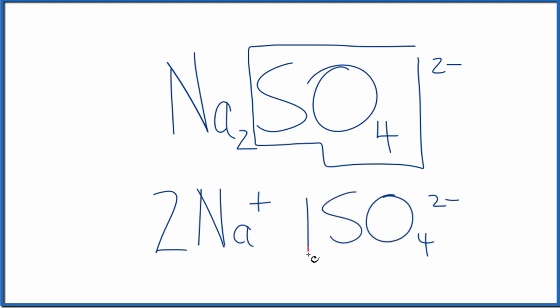And we have one of those, although we don't write the one by convention. So two sodium ions, Na+, sodium's in group one on the periodic table, they have a one plus ionic charge. And then just one sulfate ion, SO4 2-.